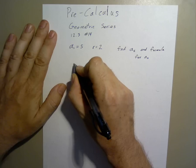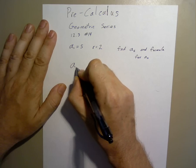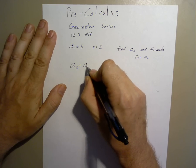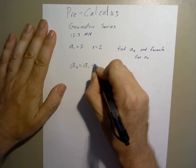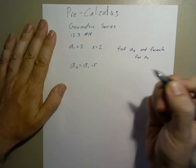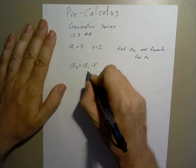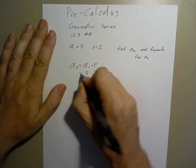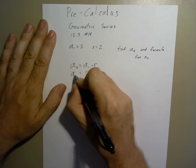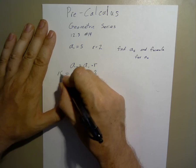So we can write a2 equals a1 times r. Or in other words, 5 times 2 equals a2, which equals 10.